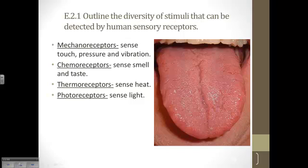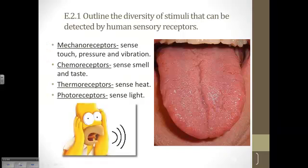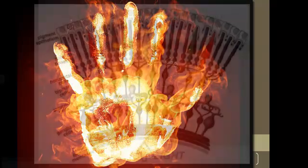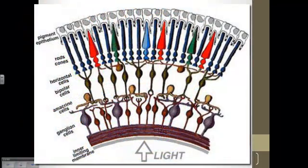For example, mechanoreceptors in the ear sense vibration, and vibration is sort of the compression current of air. Thermoreceptors sense heat, and photoreceptors sense light.